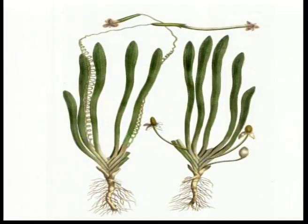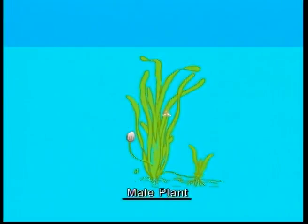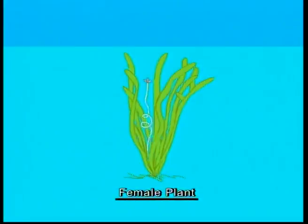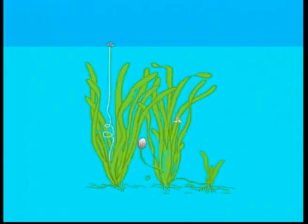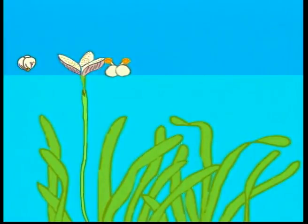Vallisneria, a submerged hydrophyte, shows ribbon-like leaves and is well adapted for pollination in water. It has separate male and female plants. The female plant has an ovary raised on a spring which uncoils after selecting a male partner, so that seed setting can take place in the mud.